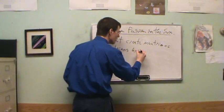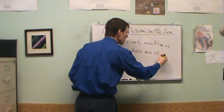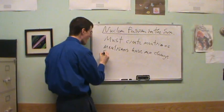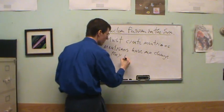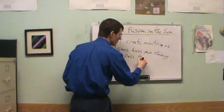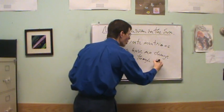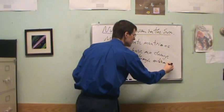Neutrinos have no charge, so they pass through ordinary matter.